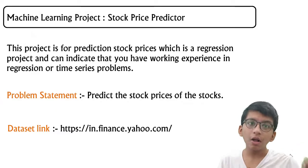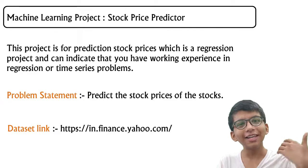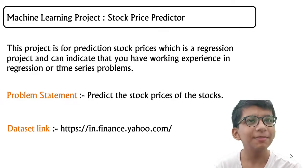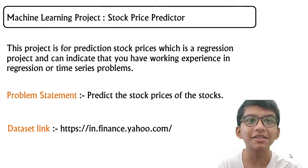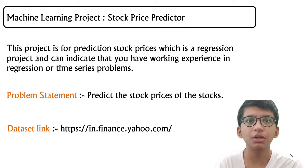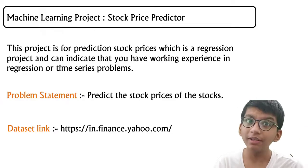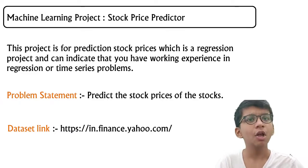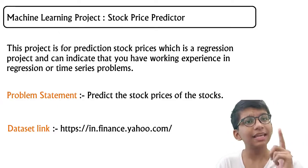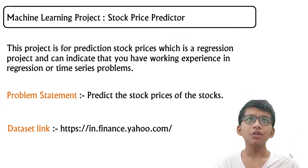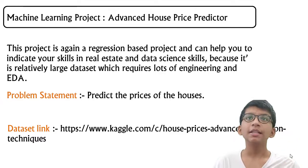The next project is a regression project: a stock price predictor. Stock prices are highly non-linear — even I can't predict with 90% accuracy — but it's a time series project and very interesting. It indicates your skills in regression, time series, and business objectives. You can predict stocks for silver, gold, Tesla, or Bitcoin. Find 10 years of historical data on Yahoo Finance and build a predictor following the full data science workflow including EDA, scoping, and feature engineering.